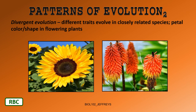Divergent evolution involves different traits evolving in closely related species. Here we see two flowering plants — angiosperms — which are very closely related. But you can see differences in the phenotype: the shape of the flower, the color of the petals, the seeds. These angiosperms are closely related flowering plants that have diverged from a common ancestor to produce very different colors, petal shapes, and seeds.